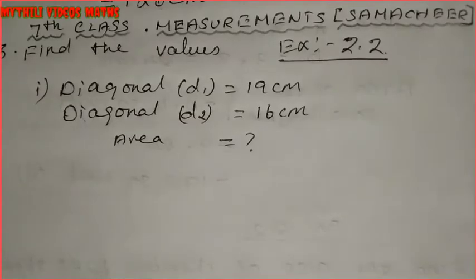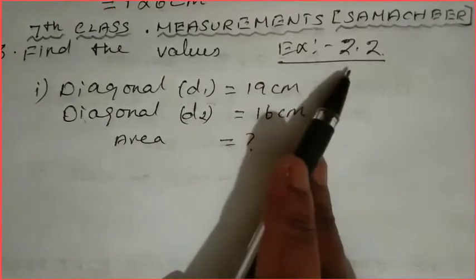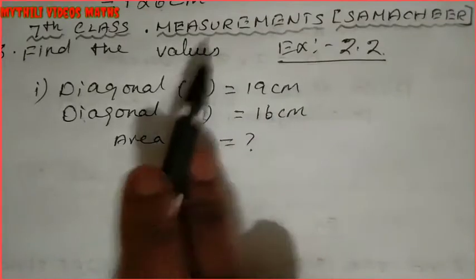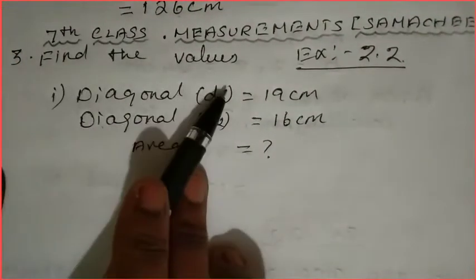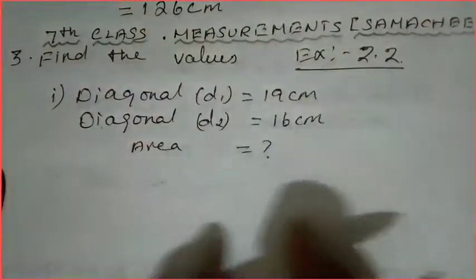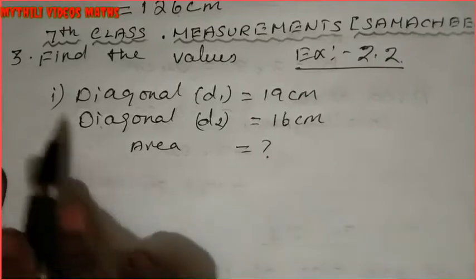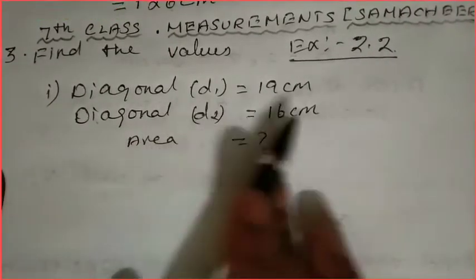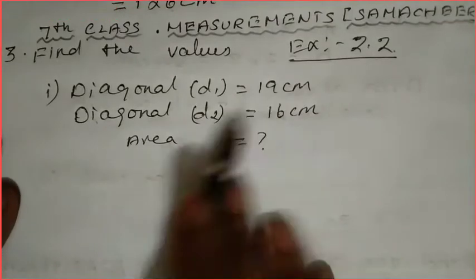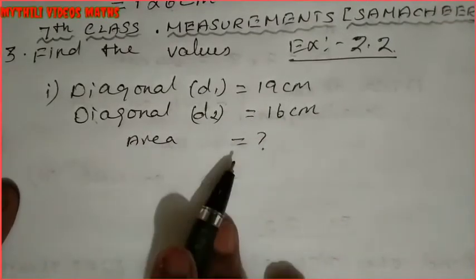Hi students, I am Mightly. This is 7th standard Math, Measurement chapter. In this exercise 2.2, we have already completed two sums and now we are going to see the third sum. We have to find the value of the missing term. The first subdivision gives diagonal d1 equal to 19 cm and diagonal d2 equal to 16 cm. We have to find the area.